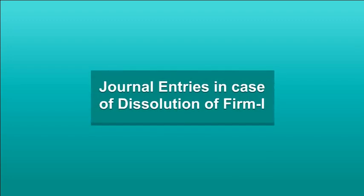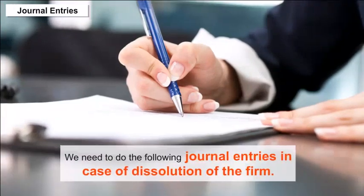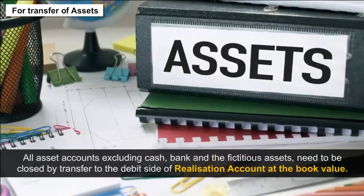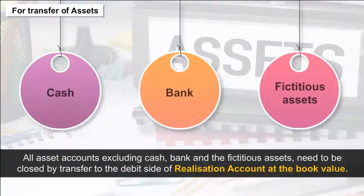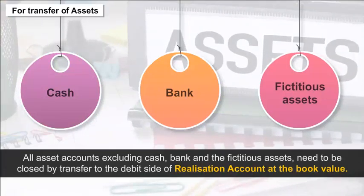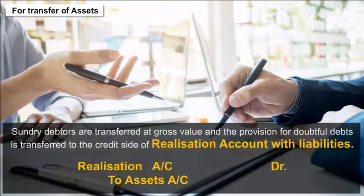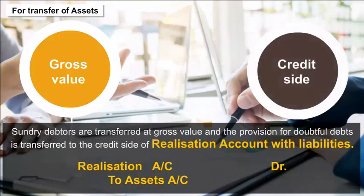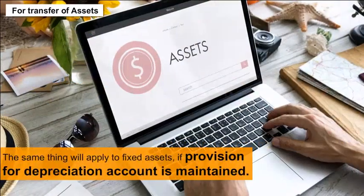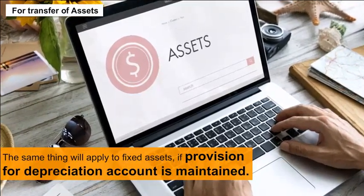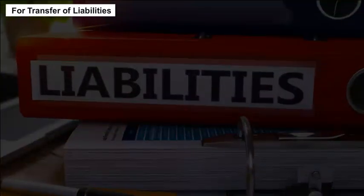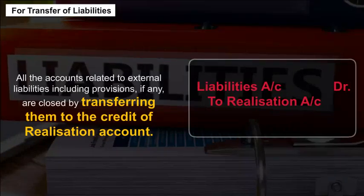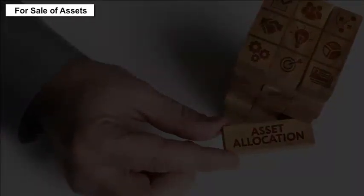Journal Entries in Case of Dissolution of Firm: For transfer of assets, all asset accounts excluding cash, bank, and fictitious assets need to be closed by transfer to the debit side of the realization account at book value. Sundry debtors are transferred at gross value, and the provision for doubtful debts is transferred to the credit side of the realization account. The same applies to fixed assets if a provision for depreciation account is maintained. For transfer of liabilities, all accounts related to external liabilities, including provisions if any, are closed by transferring them to the credit of the realization account.